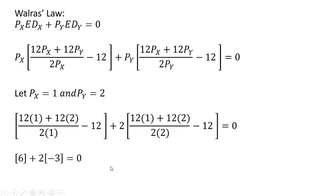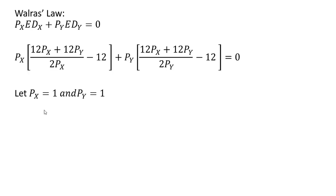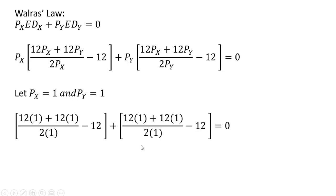Let's do another example with price of good X equals one and price of good Y equals one. Making our substitutions, you'll notice that the excess demand for good X is zero. So if the excess demand for good X is zero in one market, and we're only dealing with two markets, it must be zero in the other market as well — and indeed it is.